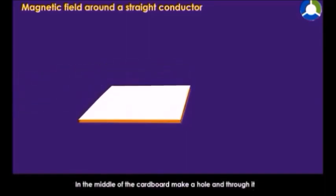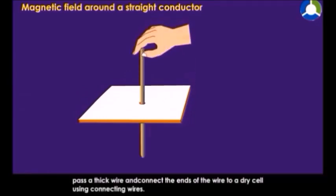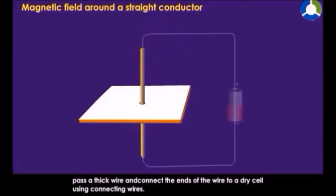In the middle of the cardboard, make a hole and through it, pass a thick wire and connect the ends of the wire to a dry cell using connecting wires.